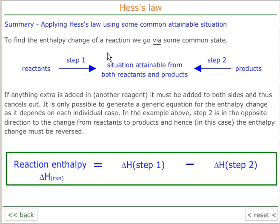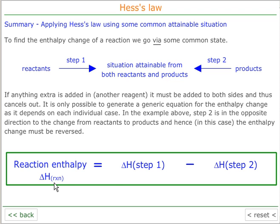In summary, we can apply Hess's law to reactions provided we have some kind of situation attainable from both reactants and products. In this case it will always be the enthalpy of step 1 minus the enthalpy change of step 2. We can add any reagent equally to both sides and they will cancel out. Therefore, we can generate a general equation: reaction enthalpy equals delta H step 1 minus delta H step 2.